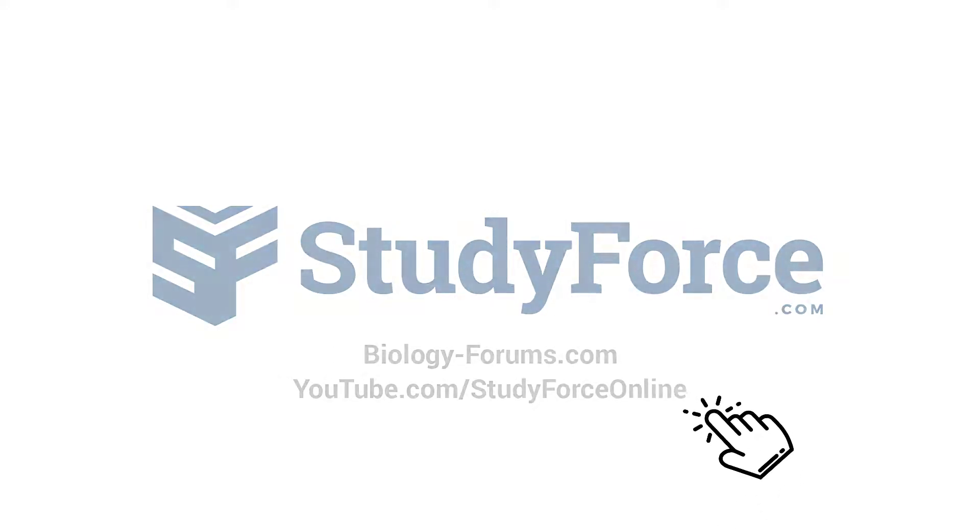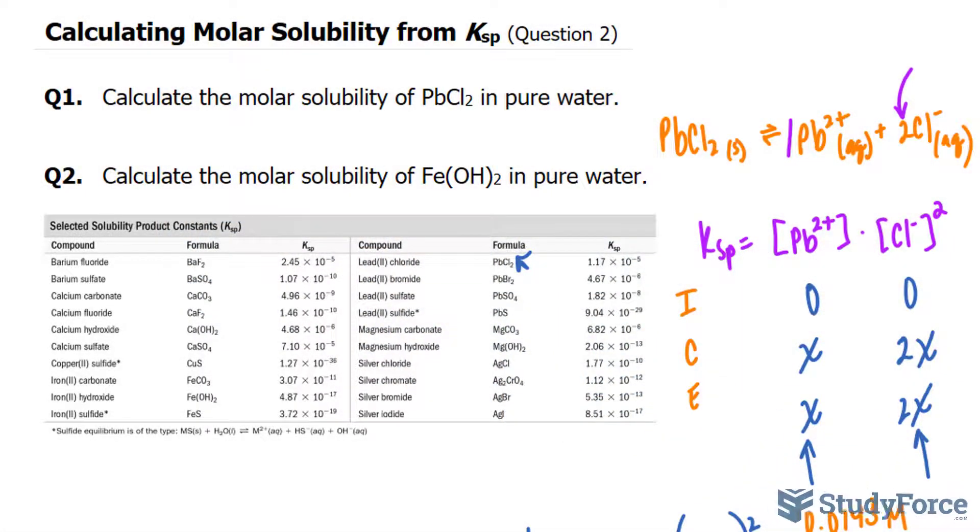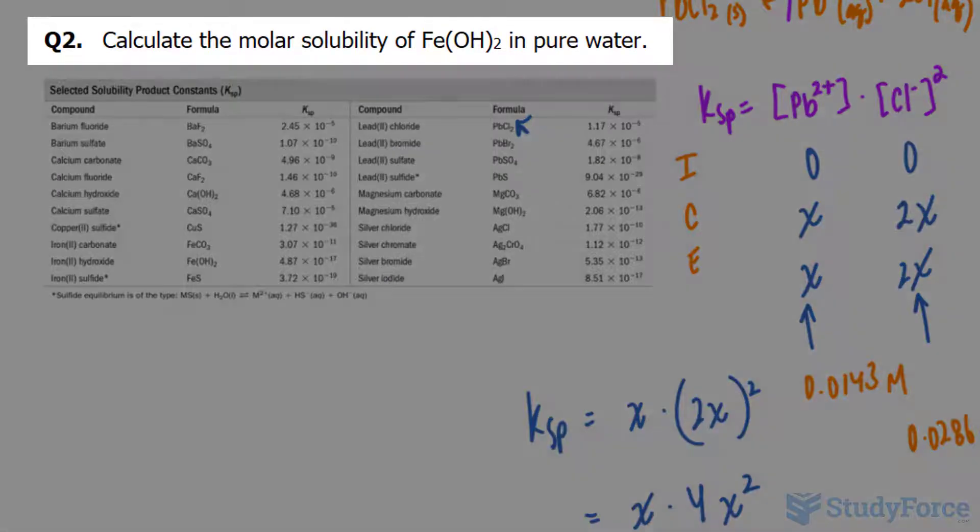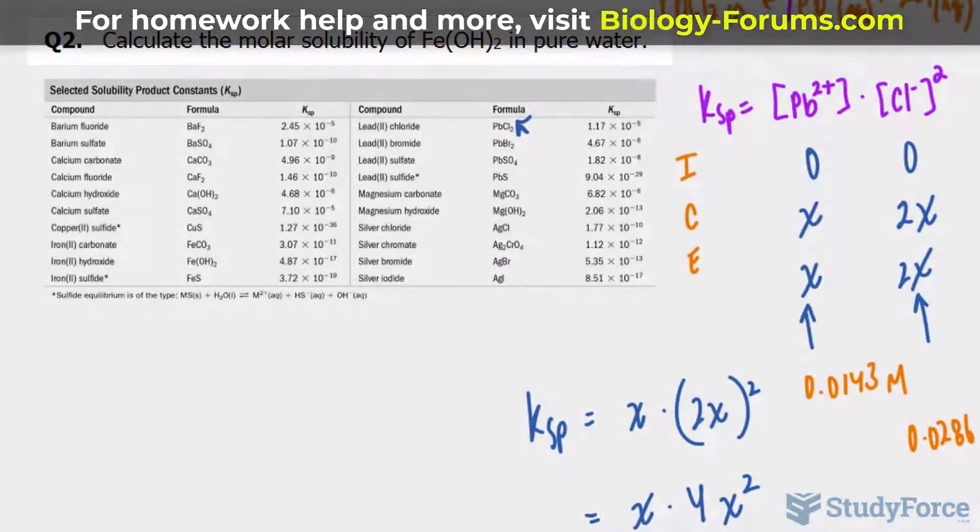Welcome back to question two of the series where we learn how to calculate molar solubility from Ksp. Question two reads, calculate the molar solubility of FeOH2 in pure water. That's iron two hydroxide.